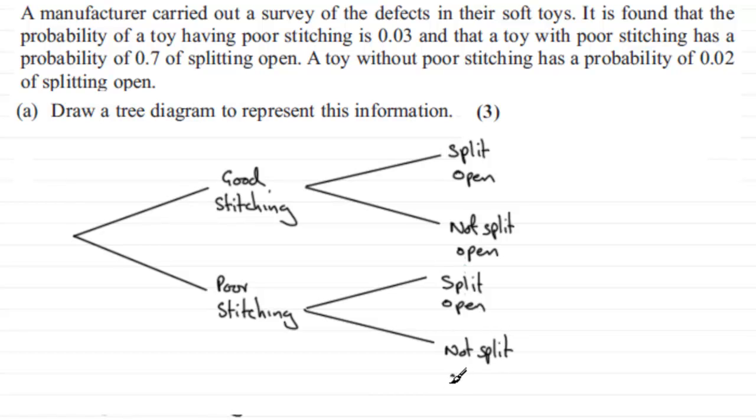So all we need to do now is just put our probabilities on. So what's the probability that a toy has poor stitching? Well, we're told that the probability of a toy having poor stitching is 0.03. So you can just write 0.03 there. And that would mean that since these probabilities have to add up to 1, this must be 0.97.